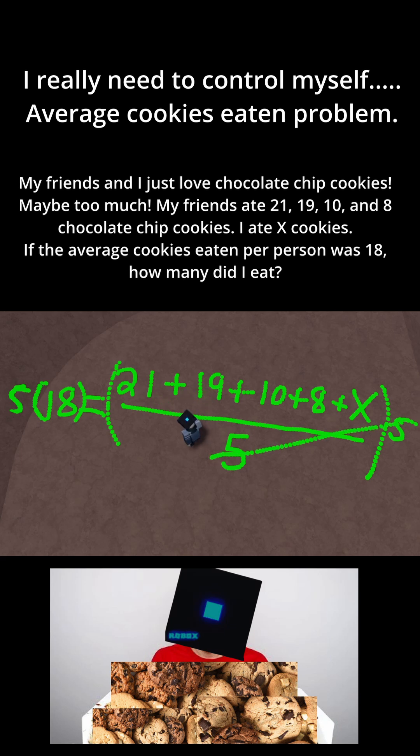So here the 5s cancel out and you're left with 21 plus 19 plus 10 plus 8 plus x.